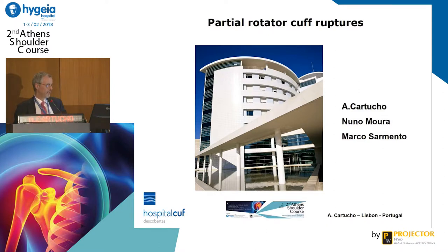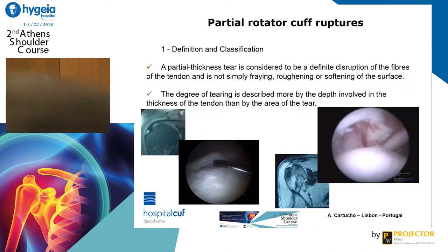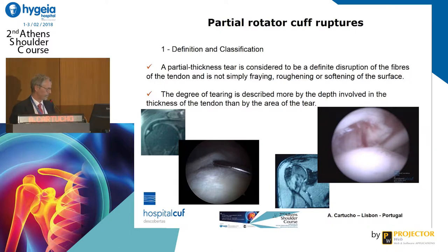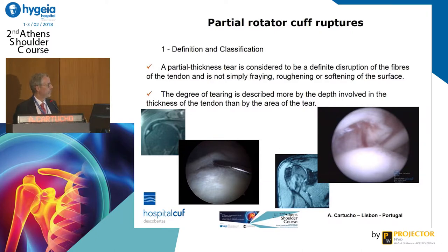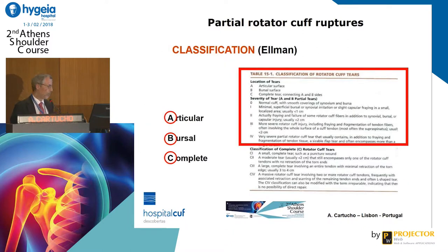I'll speak about partial rotator cuff ruptures, but only PASTA rotator cuff ruptures. First, we need to define the field. We consider a partial thickness tear a definitive disruption, not just a fraying of the tendon. The degree of the lesion is mostly described in depth, not in the extension of the lesion along the tendon. We are going to speak only about articular side rotator cuff partial tears.